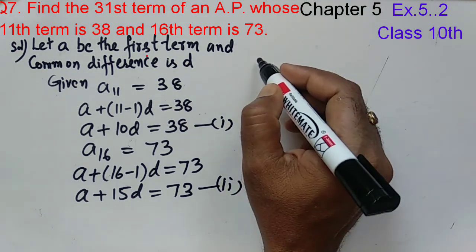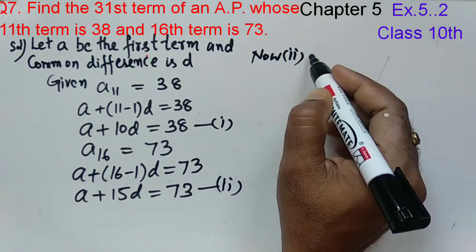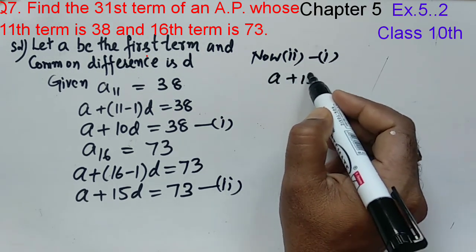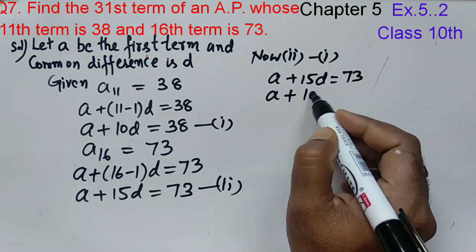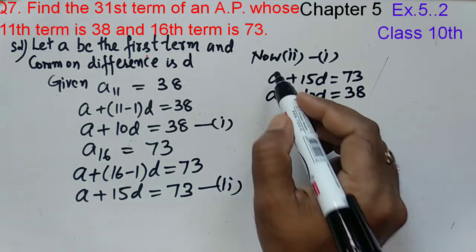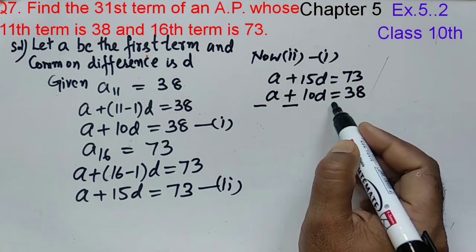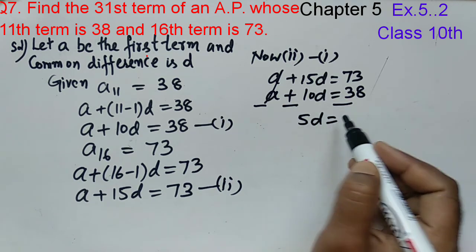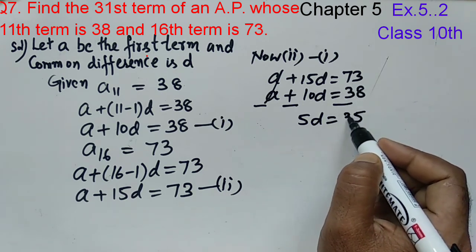Now we have two equations. We will subtract: second minus first. Second equation: A plus 15D equals 73. First equation: A plus 10D equals 38. We subtract, so signs will change.